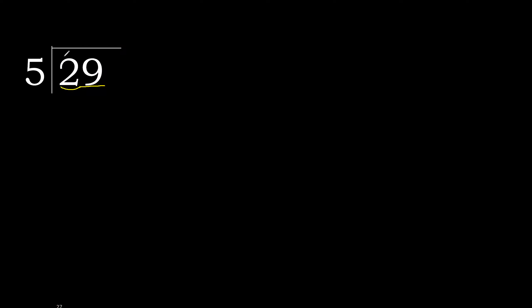5 multiplied by 6 is 30 — it's greater. 5 multiplied by 5 is 25. 29 minus 25 is 4.